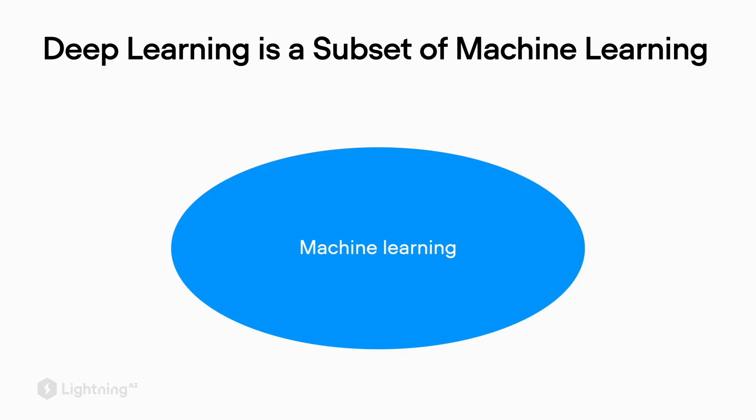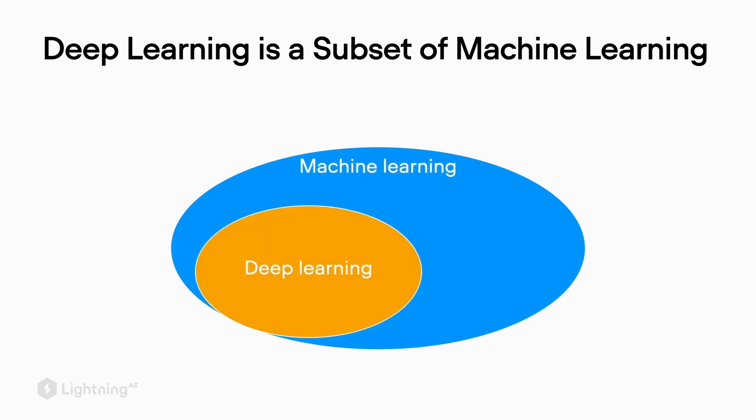If we consider the whole field of machine learning, we can think of deep learning as a subfield of machine learning, where we use deep neural networks, or neural networks with many layers.